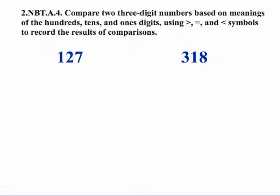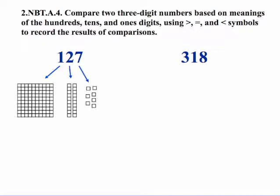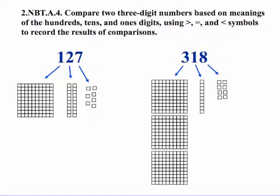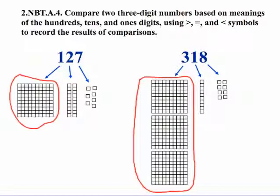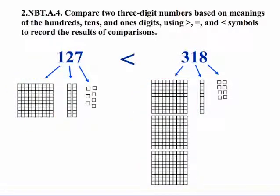Let's compare 127 to 318. But we're not ready to base this on the meanings yet. Let's use manipulatives. So here's our representation for 127: one hundred, two tens and seven ones. Here's our representation for 318: three in the hundreds place, one ten and eight ones. The first thing we look at is the hundreds place. One is obviously less than three, so 100 is less than 300. So we already know that 127 is less than 318.